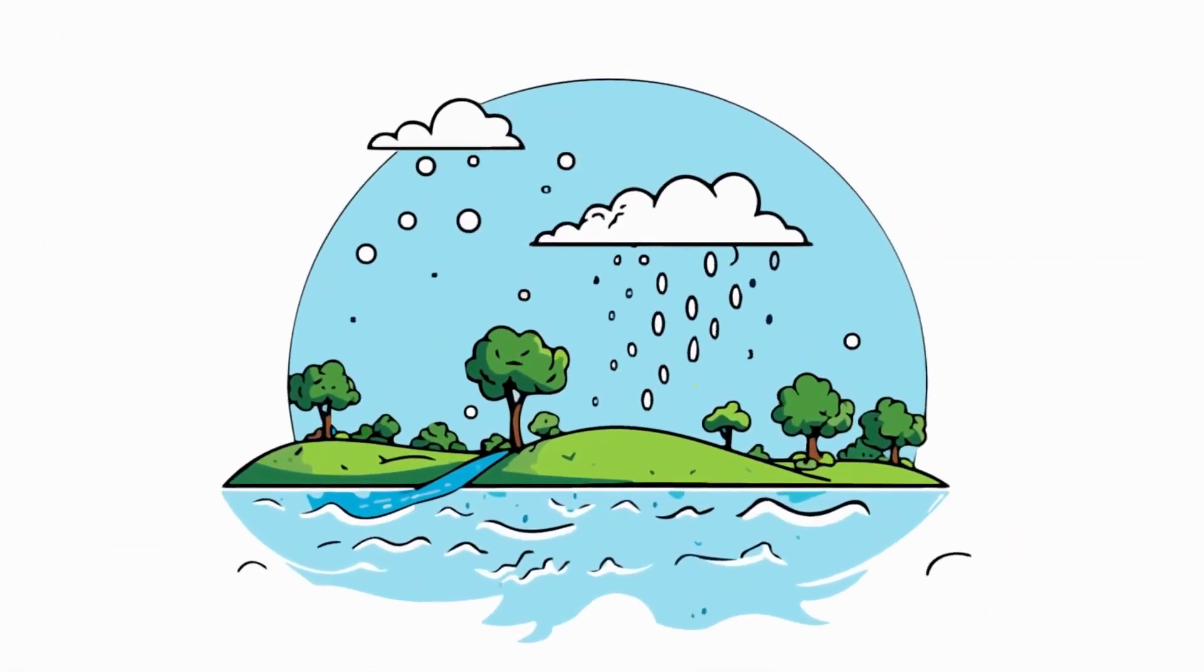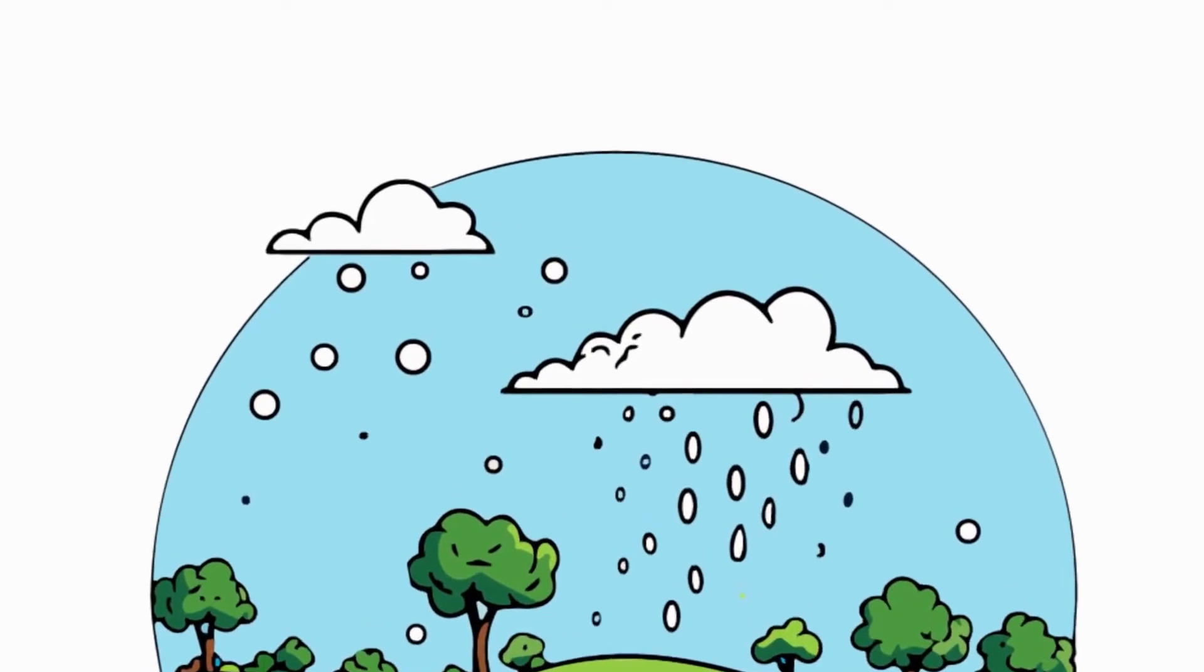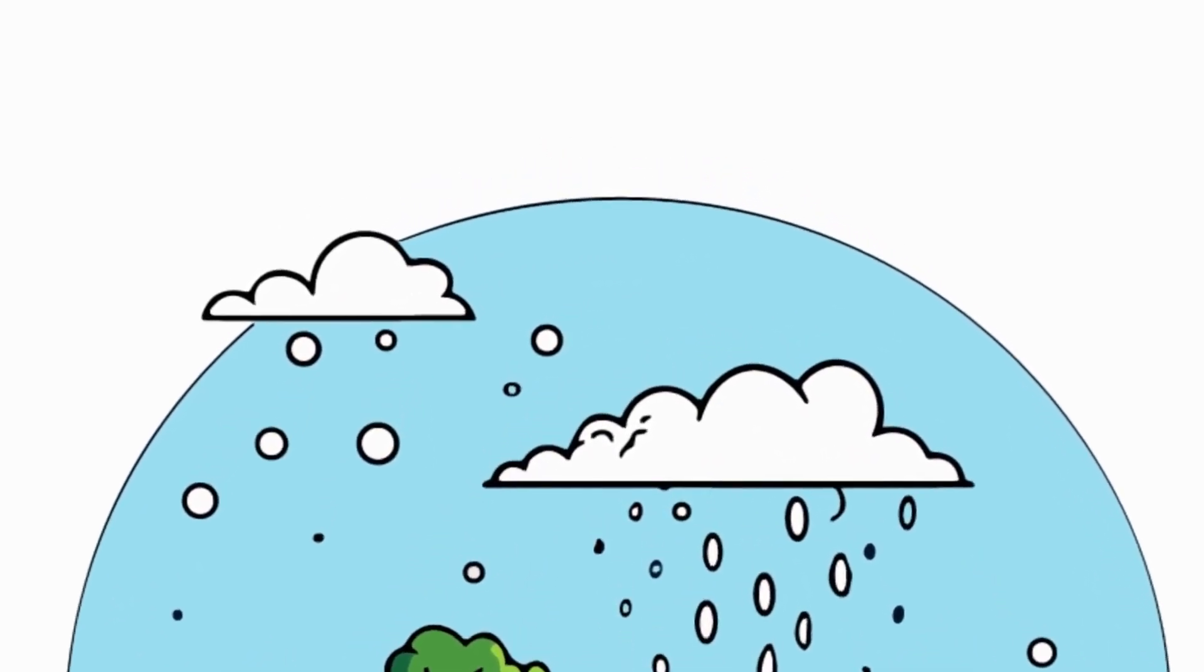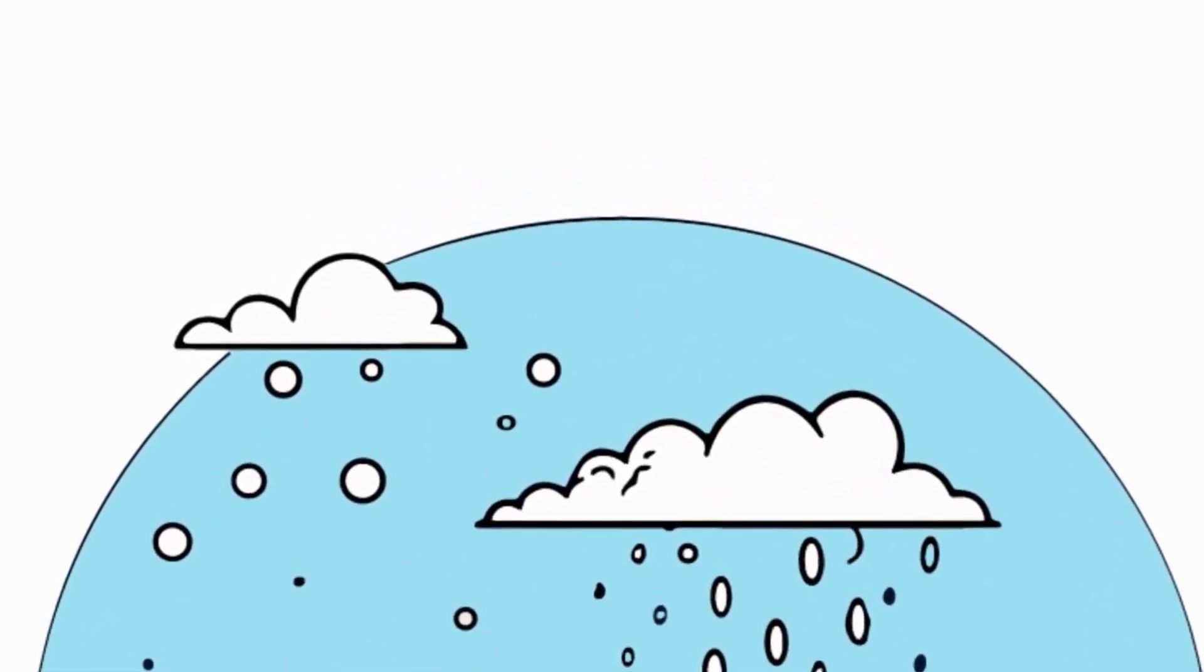In the air, water vapor cools and forms clouds. When clouds get heavy, water falls back to Earth as rain, snow or hail.